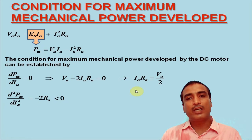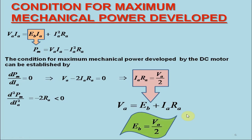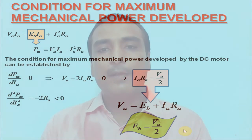Now, coming back to the condition for maximum mechanical power developed by the DC motor, we may substitute the value of IA RA in typical current voltage relationship, that is, VA is equal to EB plus IA RA. Accordingly, we may now express the condition for maximum mechanical power developed by the DC motor as EB is equal to VA by 2.